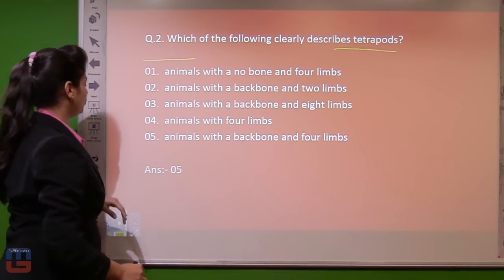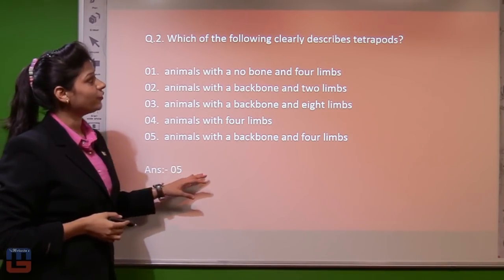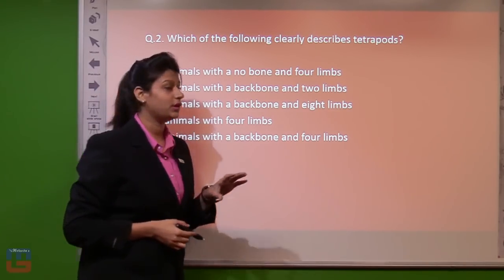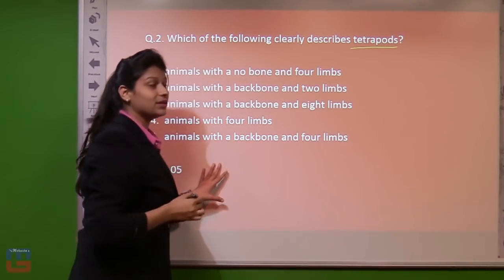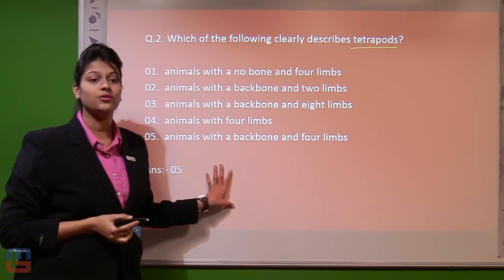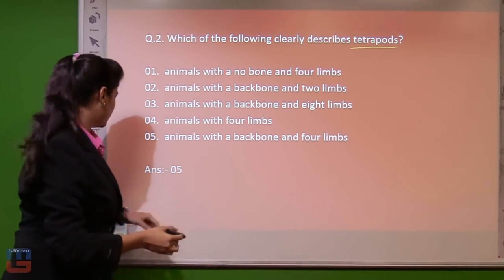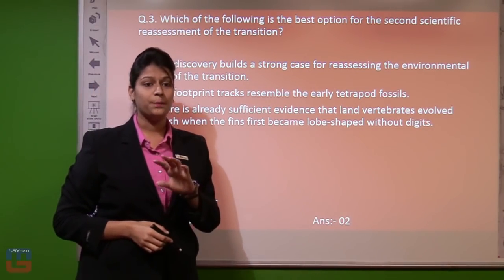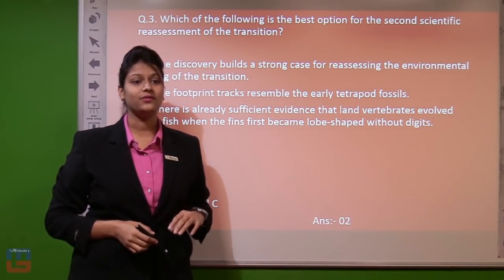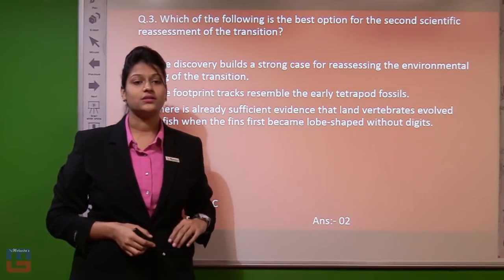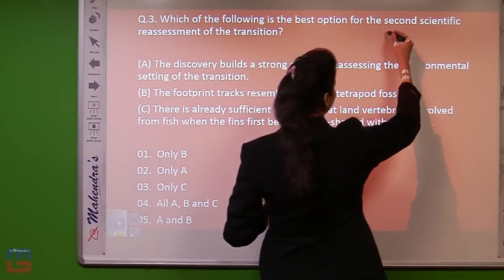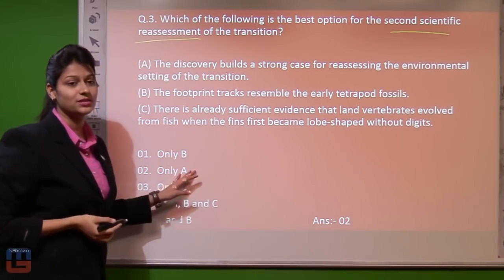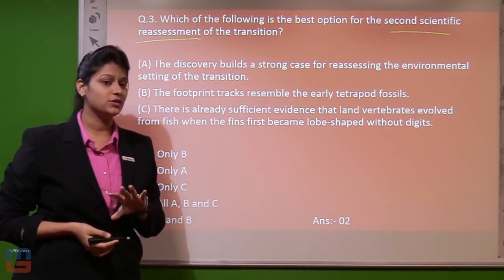Question number two asks: which of the following clearly describes tetrapods? The key point here is tetrapods — we have to find the sentence in the passage describing tetrapods. Question number three asks: which of the following is the best option for the second scientific reassessment of the transition? The key point here is 'second scientific reassessment'.